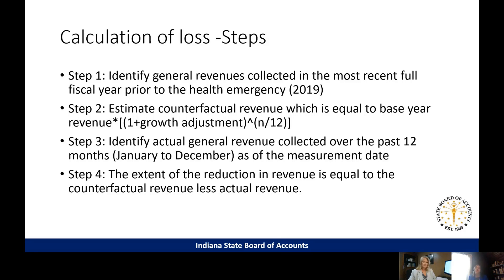This is basically an overview of the calculation straight from the interim rule. Assuming a 4.1 percent growth adjustment — though you have the option of calculating your own — the first step is to identify your general revenues collected in 2019, because that's the full fiscal year prior to the health emergency. 2019 is your base year, and you identify the total of all your general revenues for that year.